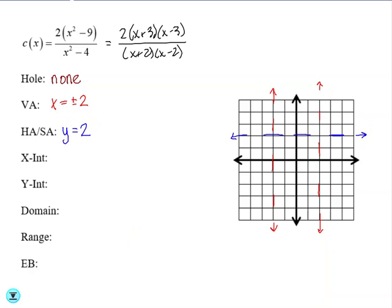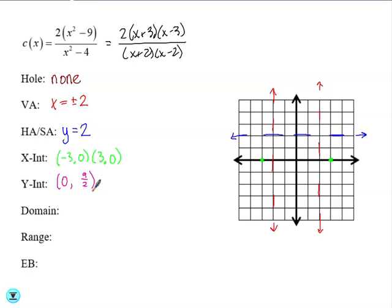Our x-intercept comes from setting the numerator equal to 0. Since it's already factored, we just set each factor equal to 0, giving us x-intercepts at (-3, 0) and (3, 0). Then our y-intercept: if you plug in 0 for x and simplify, you get (0, 9/2) or 4.5.